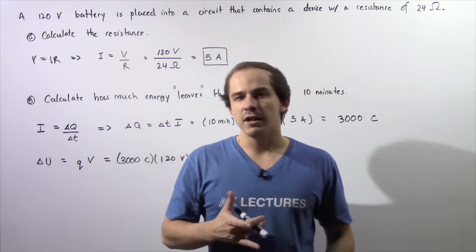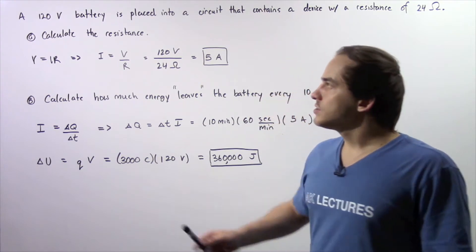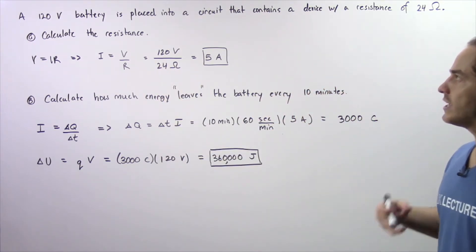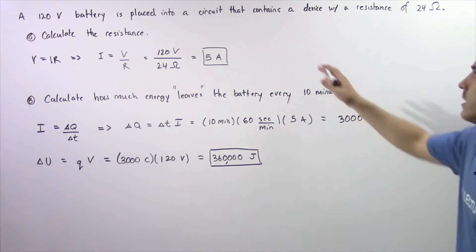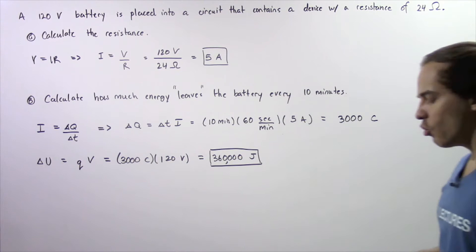Let's examine the following example that will deal with applying Ohm's law. Suppose a 120 volt battery is placed into a closed electric circuit that contains a device with a resistance of 24 ohms.